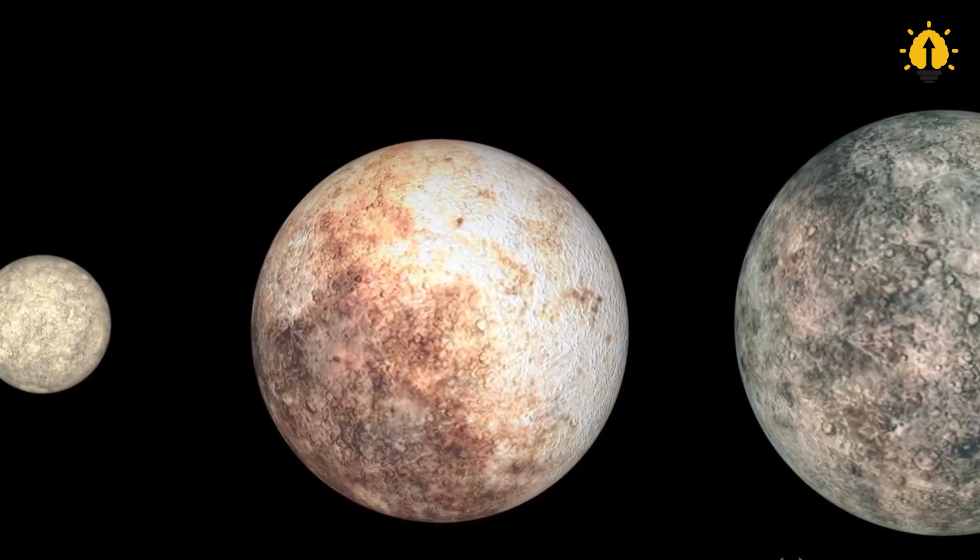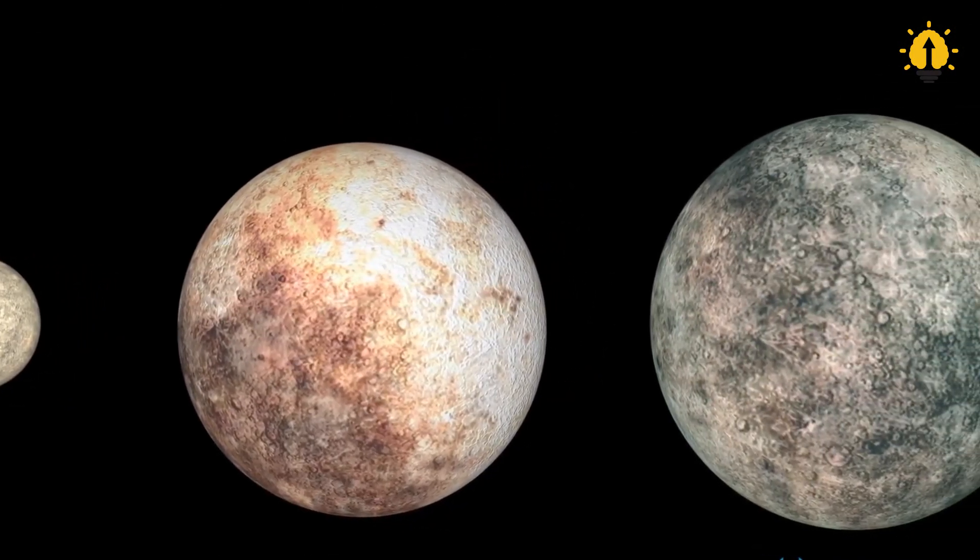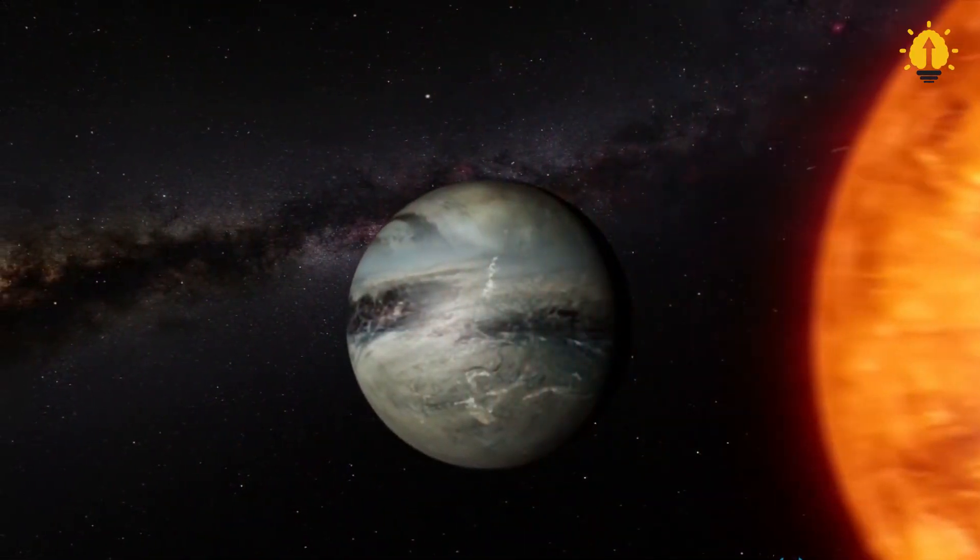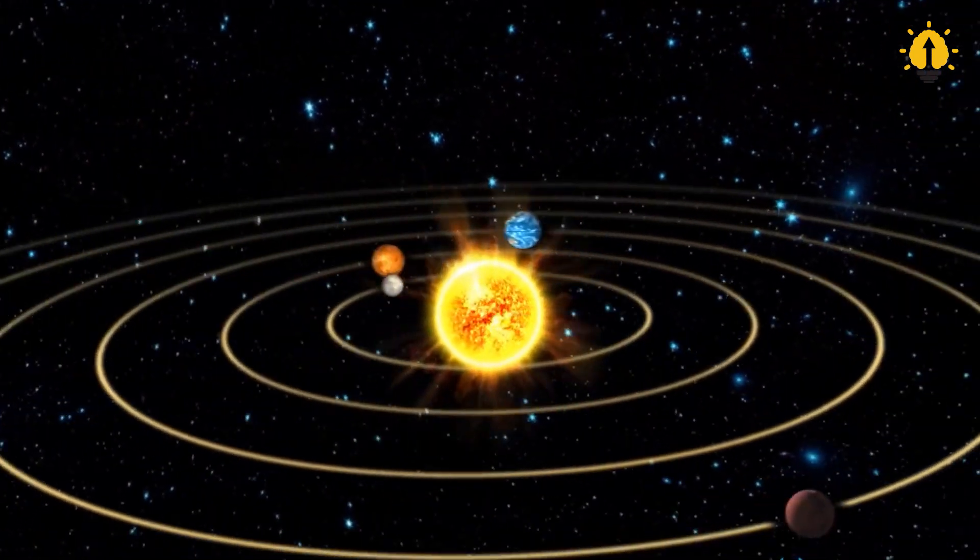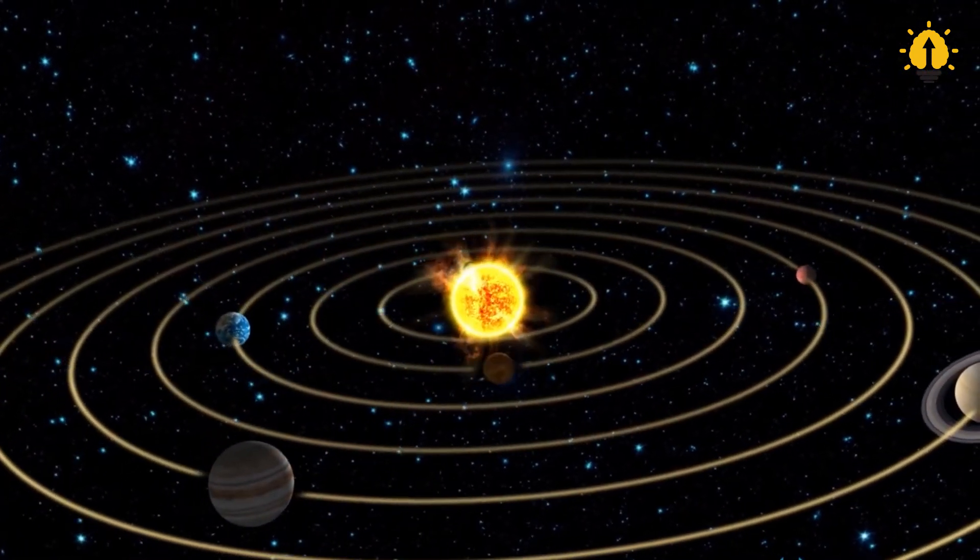The study's lead author, Matt Clement, said the arrangement of planets in our solar system is remarkably unusual. Scientists have wondered why this is the case. Could it be the influence of highly intelligent life?